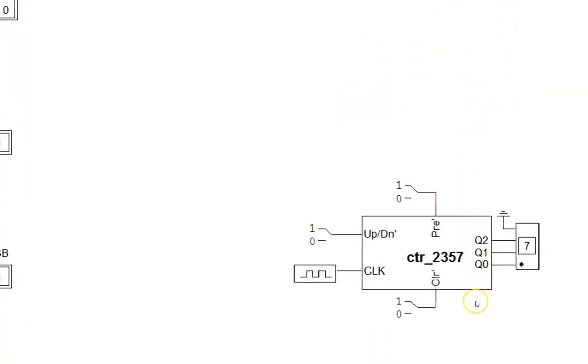Now down here we see a custom counter. It cycles through the numbers 2, 3, 5, 7, 2, 3, 5, 7, and so on. Although it may not be a typical order of numbers, it still is considered a counter because it cycles through the same sequence over and over.